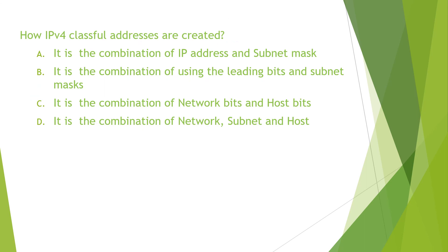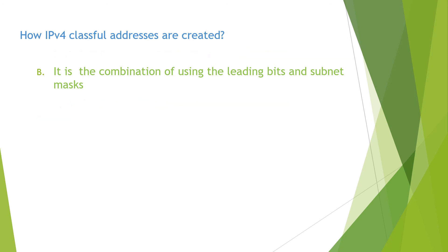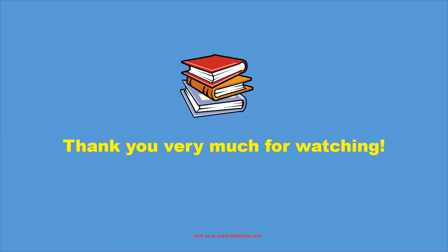The next question reads: how are IPv4 classful addresses created? The answer for this question is B, because it is a combination of using the leading bits and subnet mask. You can find the detailed explanation in the video Introduction to Subnetting. This is the end of this lesson. If you have any questions, please put them in the comment section. Thank you very much for watching.